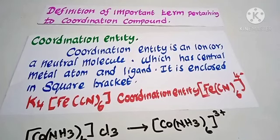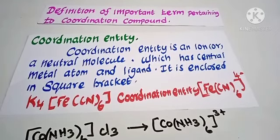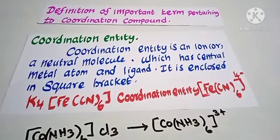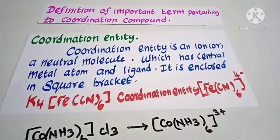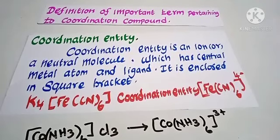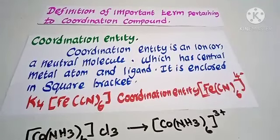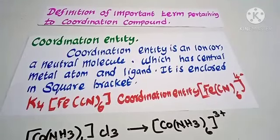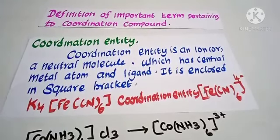Next, we are going to discuss the definition of important terms pertaining to coordination compounds. We will discuss the coordination entity. The coordination entity is an ion or a neutral molecule which has the central metal atom and an atom or group of atoms called a ligand, surrounded around the central metal atom. It is enclosed within the square bracket. The coordination entity is a part of the coordination compound having the central metal atom surrounded by the ligands.